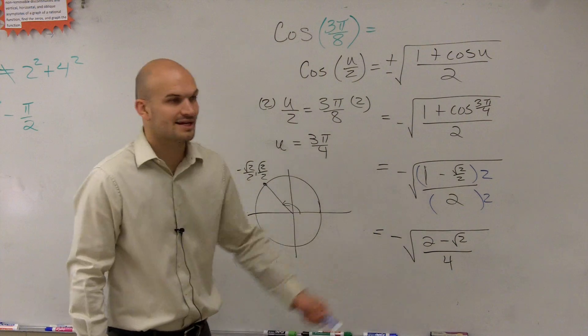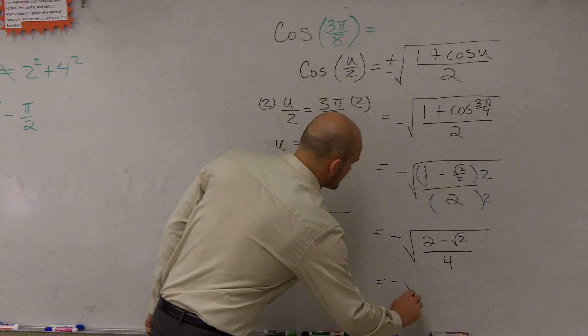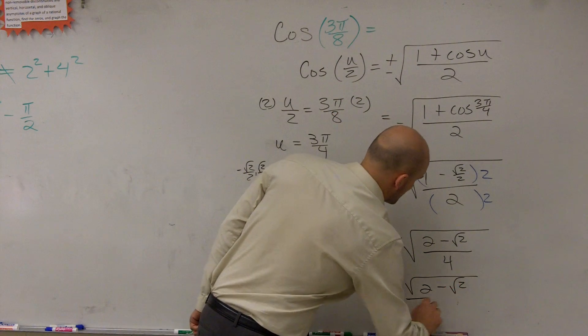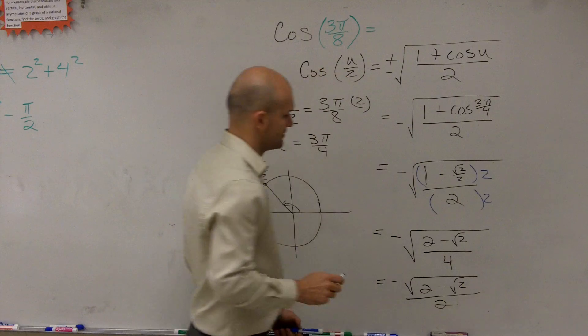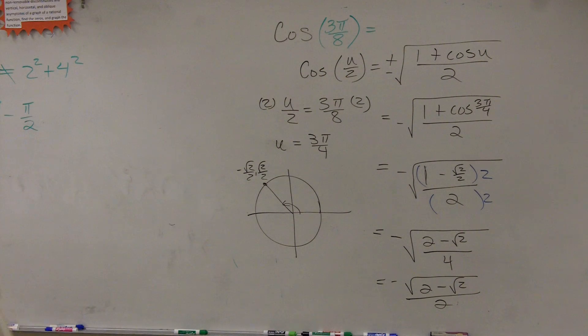So negative square root of 2 minus square root of 2 divided by 4. And again, we can take the square root of our denominator. So we're equal to negative 2 minus the square root of 2 all over 2. So we're going to take the square root of the denominator.